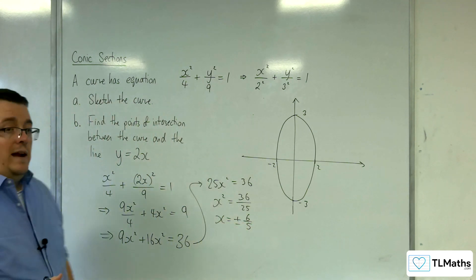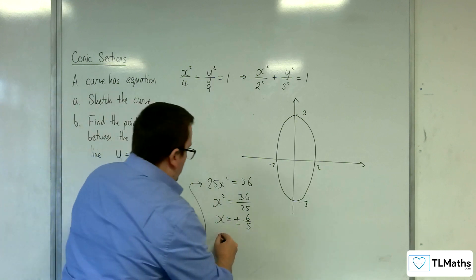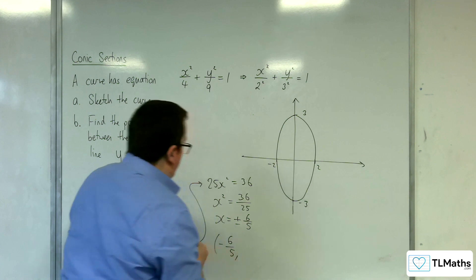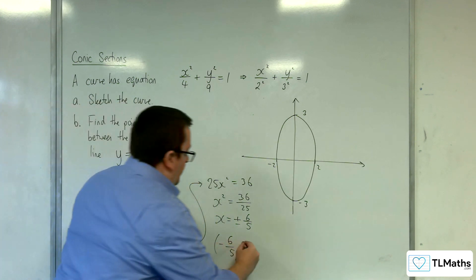So they're the values of x. And now we just need to find the values of y. So we're going to have minus 6 fifths. And when x is minus 6 fifths, y is going to be minus 12 fifths.